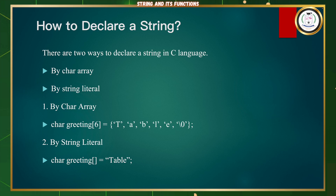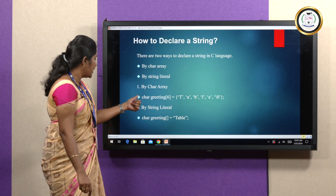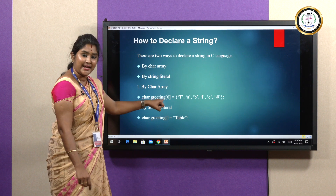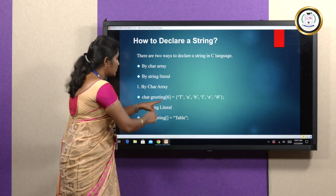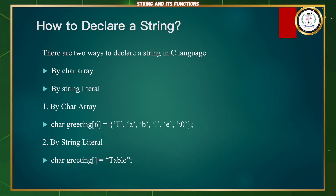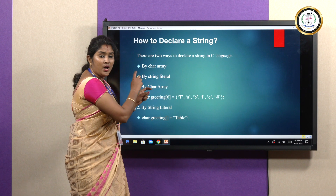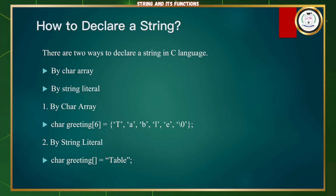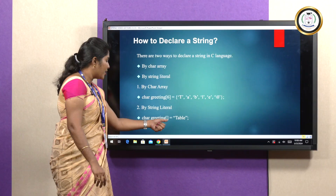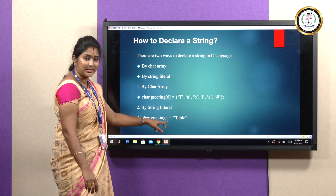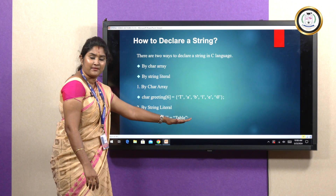Declaring a string: there are two types — character array and string literals. For a character array, we mention the char data type, an array name, and the size in square brackets, with characters given one by one in single quotes. For string literals, we specify the data type and array name without specifying the memory allocation, and give the input as a string.